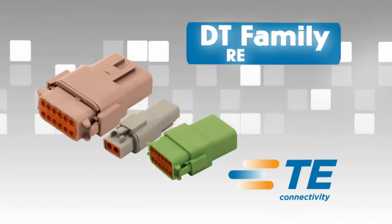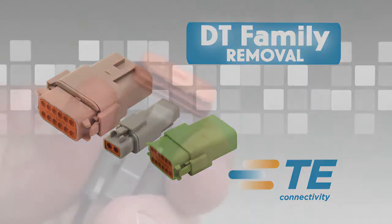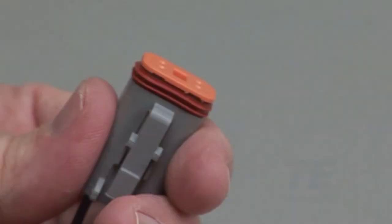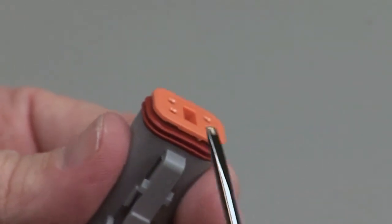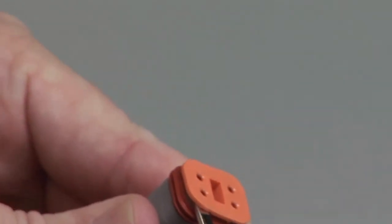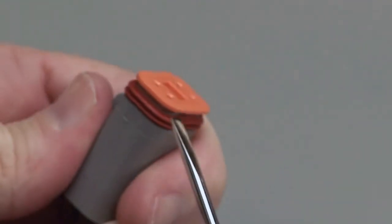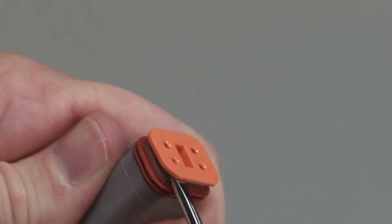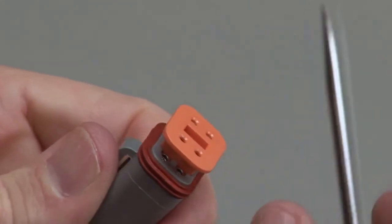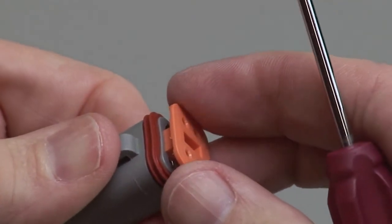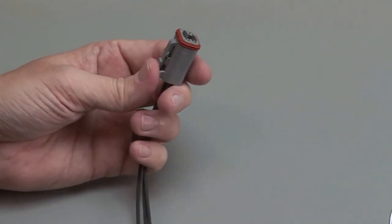DT contact removal. Connectors must be unmated to remove the contacts. Begin by removing the wedge lock with a DT-RT1 removal tool, a screwdriver, a hooked tool or a pair of needle nose pliers. Being careful not to damage the interfacial seal, pull the wedge lock straight out.